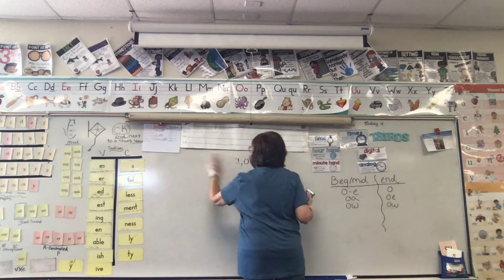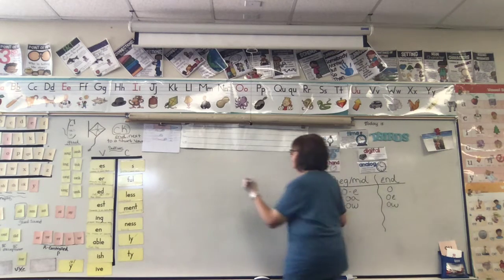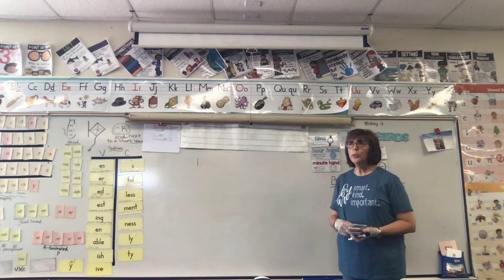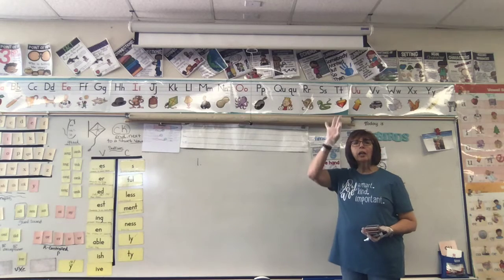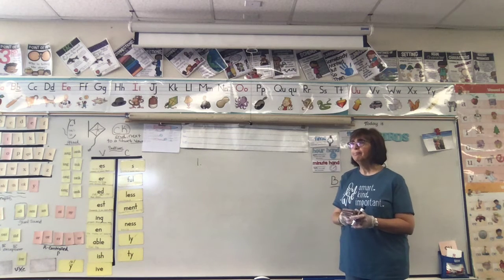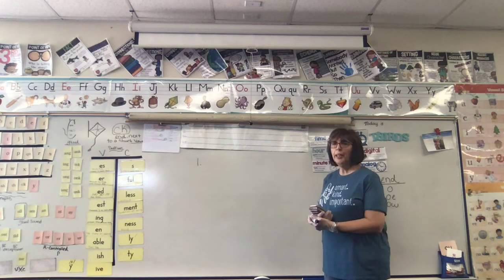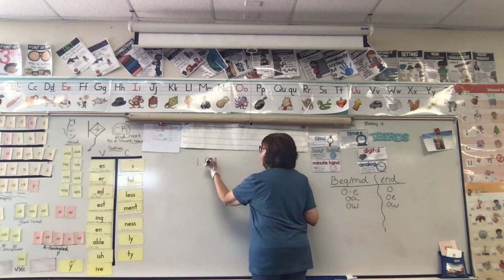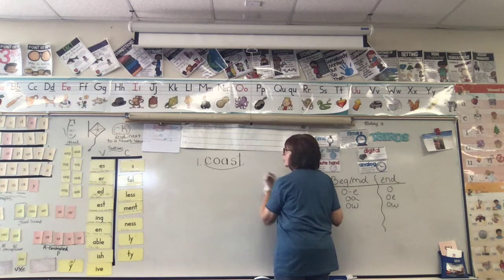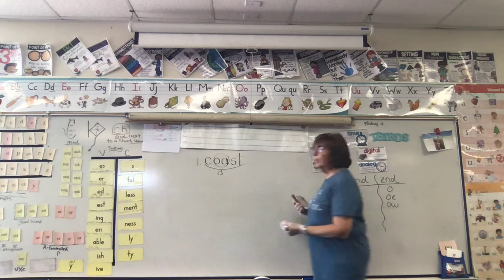Now some words. Three of them. Word number one. Coast. California has a beautiful coast. Let's tap it before we write it. C-O-A-S-T. Here we go. C-O-A, we use that option, S-T. Coast. Now to mark it. Remember we scoop our syllable. We circle D for that double vowel.